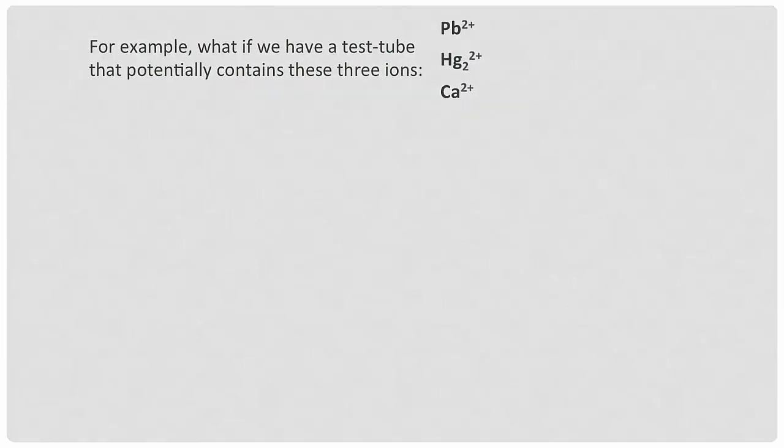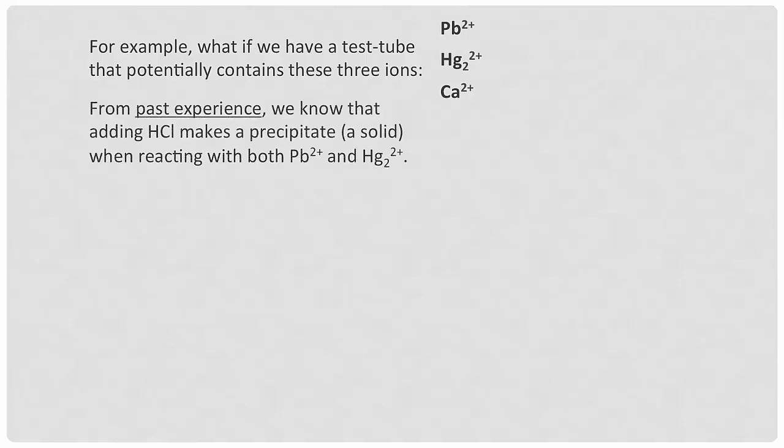Here's an example. Suppose I have a test tube and it might contain lead, mercury, or calcium ions. We don't know which one it is, but we can look at the chemistry. From past experience, we know that HCl — hydrochloric acid — will form a precipitate with both the lead and the mercury.